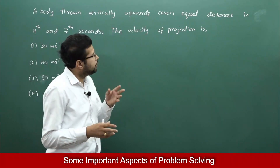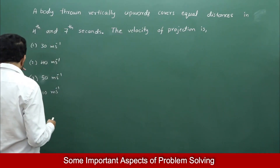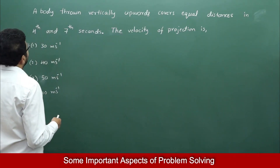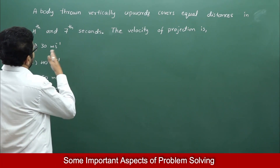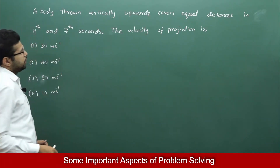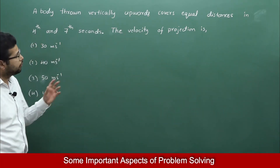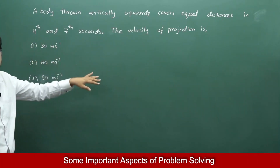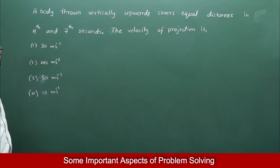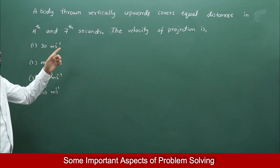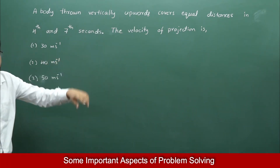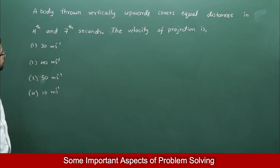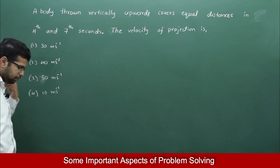I will explain it by giving an example. A body is thrown vertically upwards and covers equal distances in the 4th and 7th seconds. The velocity of projection is to be found — there are four options given.